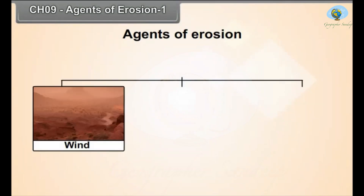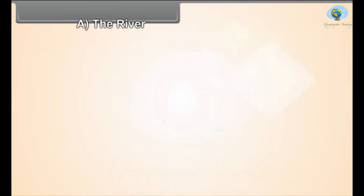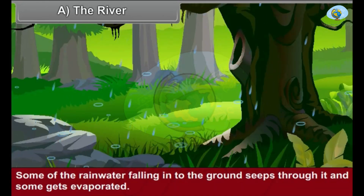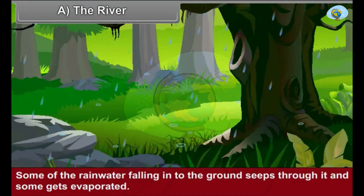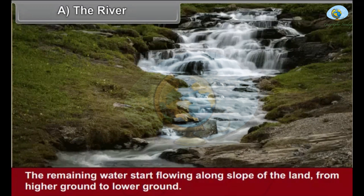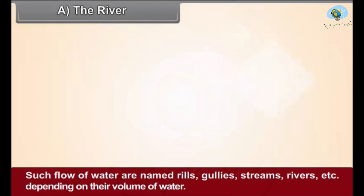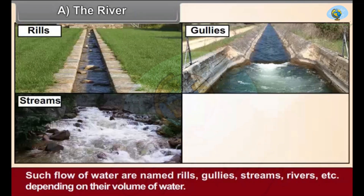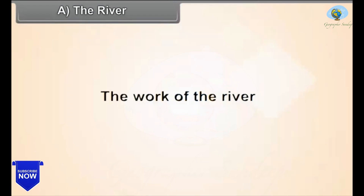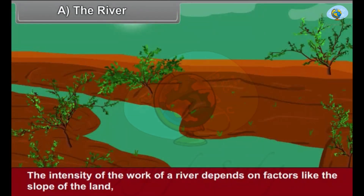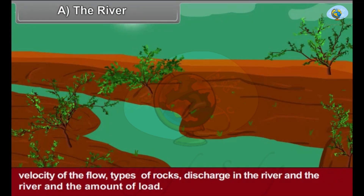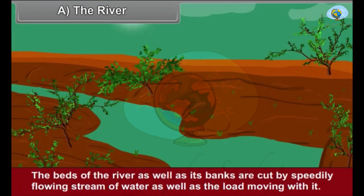In this chapter we shall study the work of river, wind, and glaciers. Some of the rainwater falling on the ground seeps through it and some gets evaporated. The remaining water starts flowing along the slope of the land from higher ground to lower ground. Such flows of water are named rills, gullies, streams, and rivers depending on their volume. The intensity of the work of a river depends on factors like the slope of the land, velocity of the flow, types of rocks, discharge, and the amount of load.